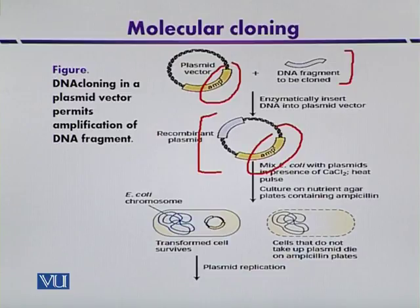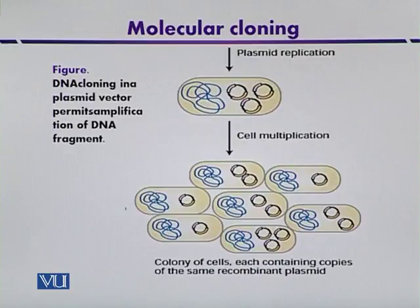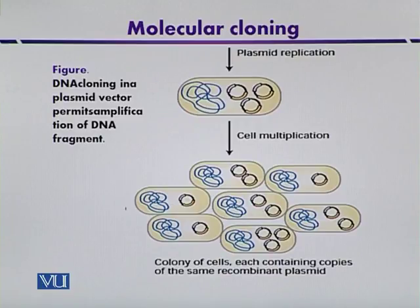We transfer the recombinant vector into the host bacterium. When the bacterium grows on medium supplemented with ampicillin, only those transformants containing our gene of interest will be able to grow. The plasmid multiplies in the host, producing many copies of the microbes. Then the laborious screening steps begin to find our desired clone from millions of cells.